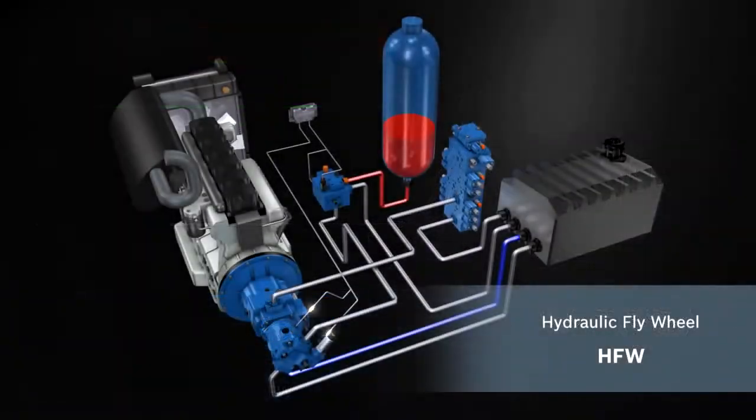In addition to downsizing and a boost function, HFW also makes energy recuperation possible. Instead of the combustion engine, the hydraulic flywheel breaks the load of a slewing gear in the closed circuit, or even of an entire vehicle. The braking energy is converted into hydraulic energy by filling an accumulator.